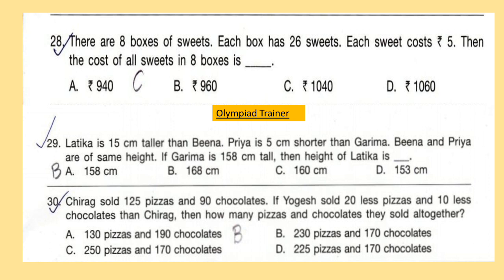Question 28: There are 8 boxes of sweets. Each box has 26 sweets. Each sweet costs rupees 5. Then the cost of all sweets in 8 boxes is dash.